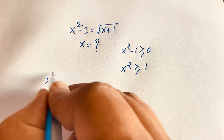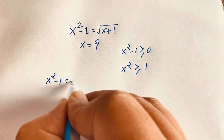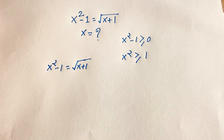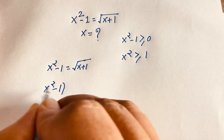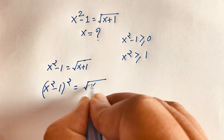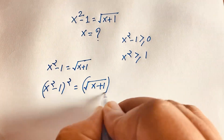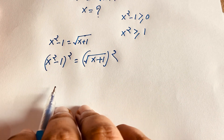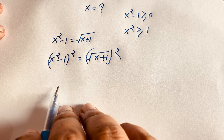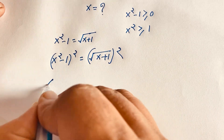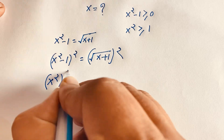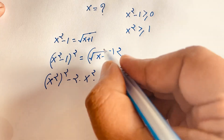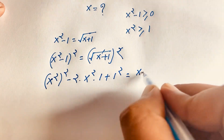Here, x squared minus 1 is equal to square root of x plus 1. If I square both sides, then x squared minus 1, whole to the power of 2, is equal to square root of x plus 1, whole to the power of 2. Using the (a minus b) whole square formula — a squared minus 2ab plus b squared — it will be x squared whole to the power of 2 minus 2 times x squared times 1 plus 1 squared is equal to x plus 1, since the square root is cancelled.